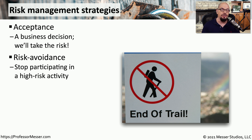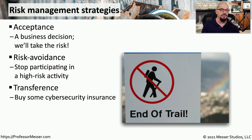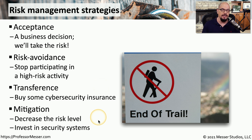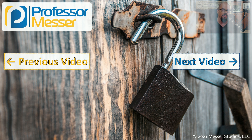Some organizations are very concerned about risk, especially involving malware and ransomware. Instead of taking the full risk of those situations, they'll choose to purchase cybersecurity insurance, which might help financially if one of those events occurs. Or it may be that we decide to decrease the risk level through mitigation — purchasing additional software and hardware to help prevent these types of security events from occurring.